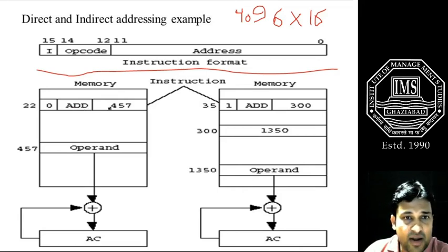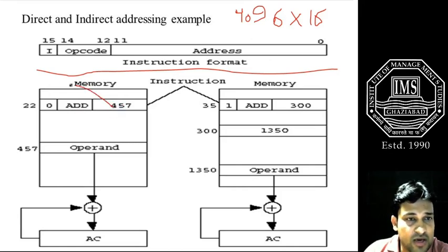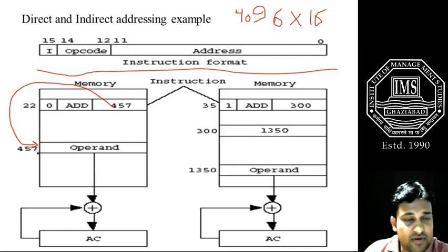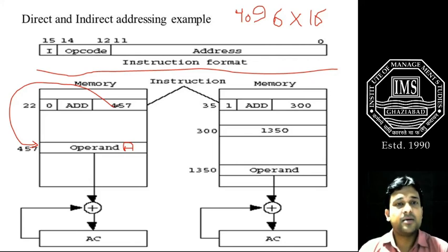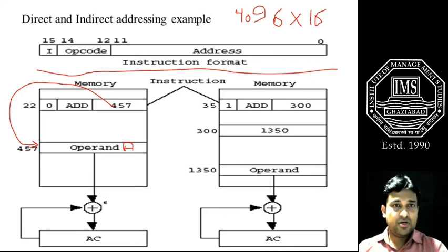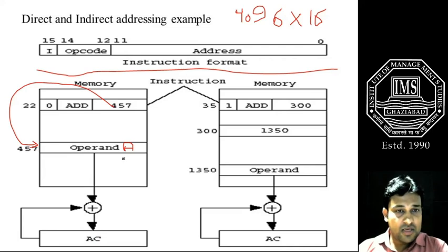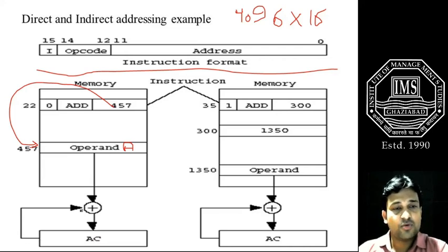We will find the operand at address 457. The control goes from the instruction to memory slot number 457. At that memory slot we have our operand — suppose that will be A. So operand A will be found in memory slot 457. In this basic architecture of direct addressing, the operand is directly added to the accumulator, which is the processor register.